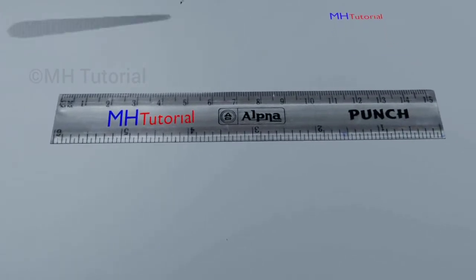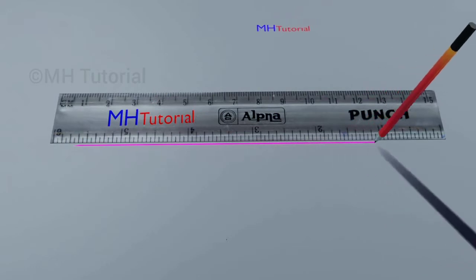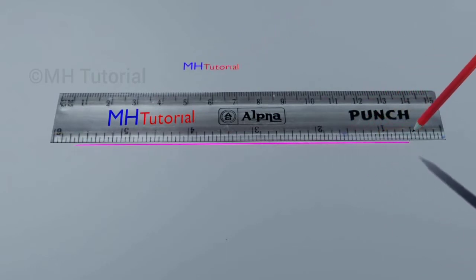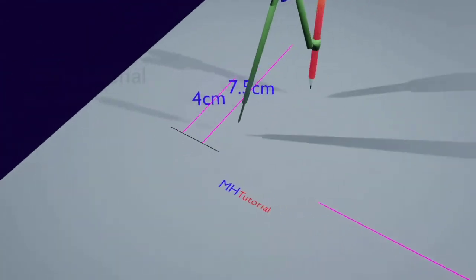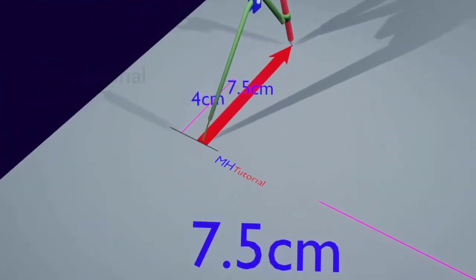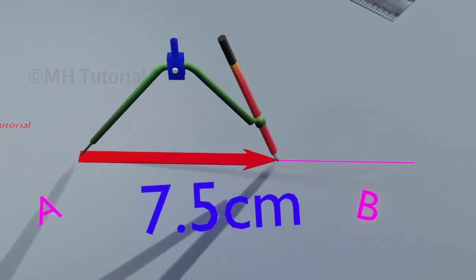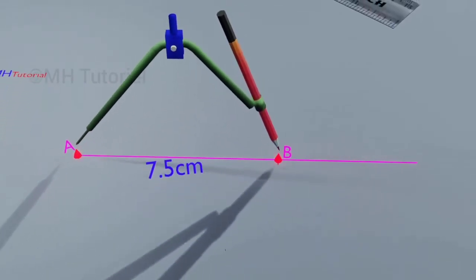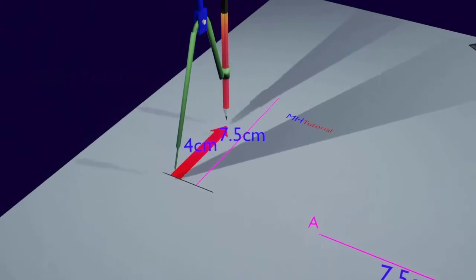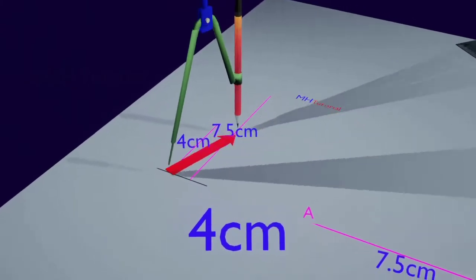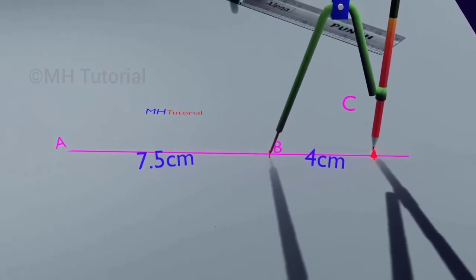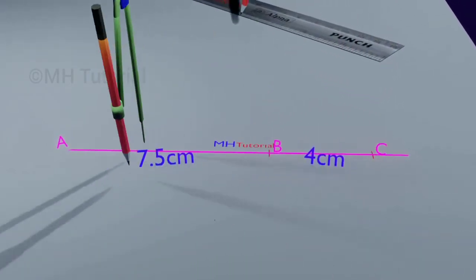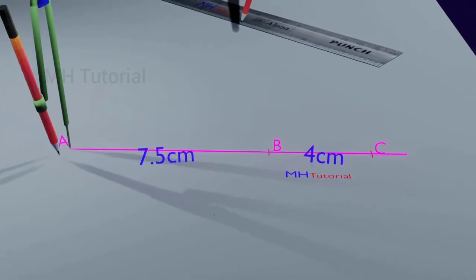Then a large line section of any length is drawn in the middle of the page. The length of 7.5 centimeters is copied using the compass. The same amount is cut out from the line segment on the mid page. Let this part be named AB. Then the length of 4 centimeters is copied. The same length is subtracted from the rest of the line segment. This very part is BC.